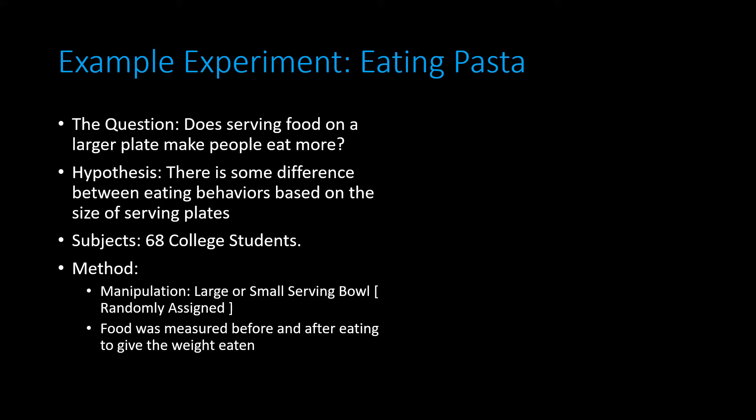There were 68 college students in this experiment. The method involved having large or small serving bowls full of pasta — not shown at the same time. Students were randomly assigned by a coin flip to either the large bowl or small bowl condition. They were allowed to select as much food as they wanted from these bowls, after which the plates were measured to see how much they had taken. Then they let them eat as much as they wanted and measured the food again to see how much had been eaten.